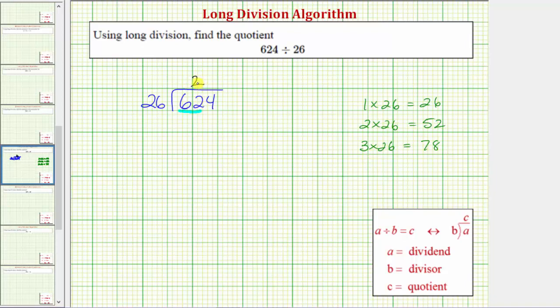Now we multiply 2 and 26, which is 52. Every time we find a product, we subtract. Another double-check to make sure the digit in the quotient is correct is that when we subtract, the difference must be less than the divisor. If it's greater than or equal to the divisor, the digit in the quotient is incorrect. 62 minus 52 equals 10. Notice 10 is less than 26, so the 2 is correct.